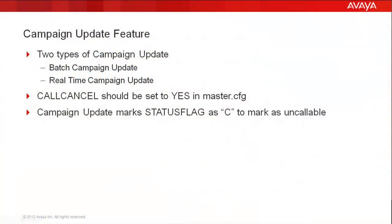A campaign update feature allows you to mark records uncallable on the outbound calling list. There are two types of campaign updates: batch and real-time. In this video, we'll be talking about only the real-time campaign update.